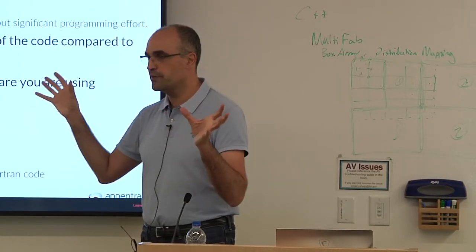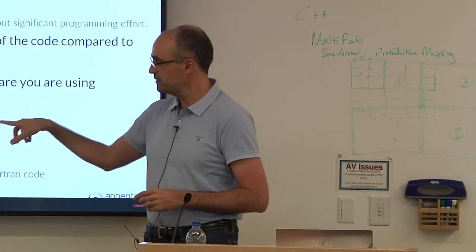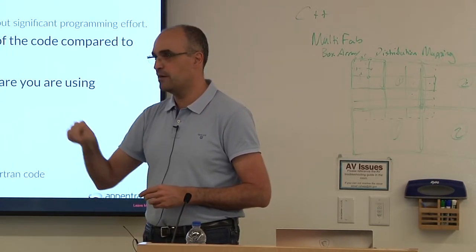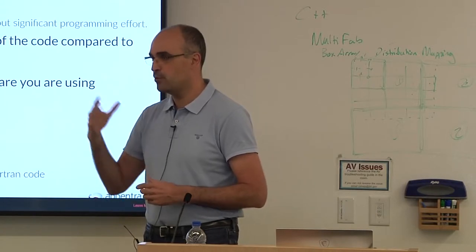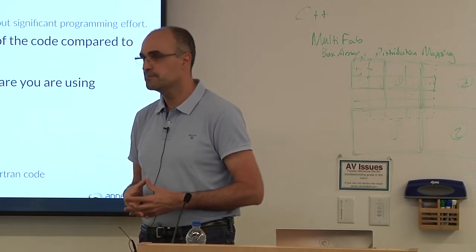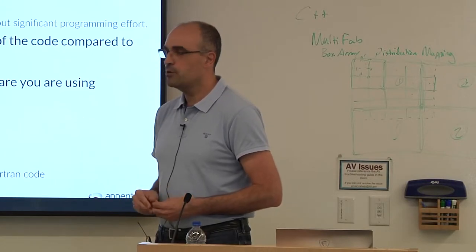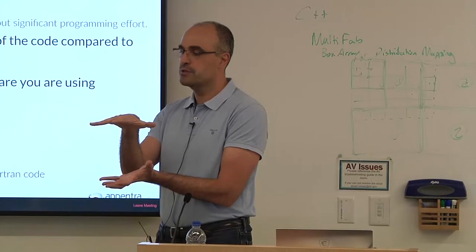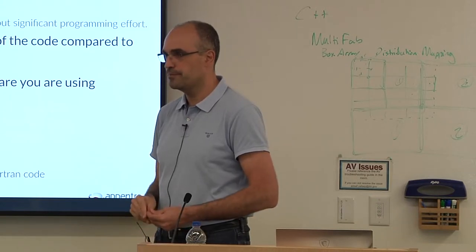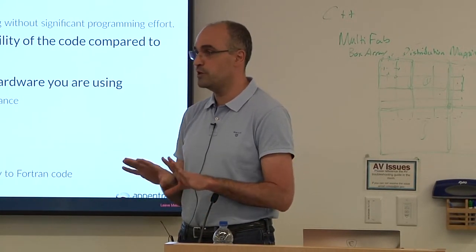The method for decomposing code into patterns applies to any programming language — it is independent of the language you are using. What is tied to C is the current version of Parallelware Trainer 1.2 installed on Cori that we will use today. We will improve the product to support C++ and Fortran. As long as you write some functions in a C-like style within C++ code, you can analyze those files with Parallelware Trainer, though this is very dependent on which C++ features you use.